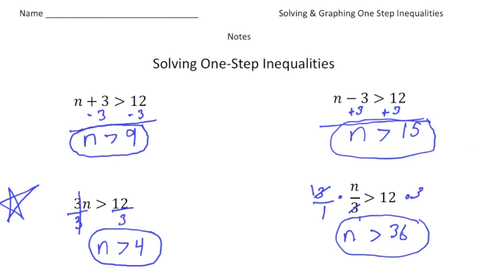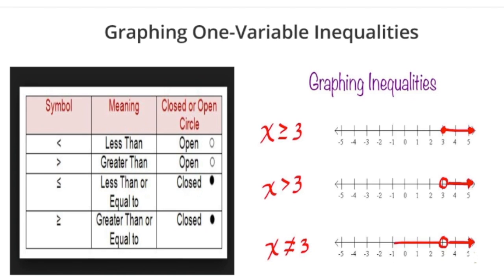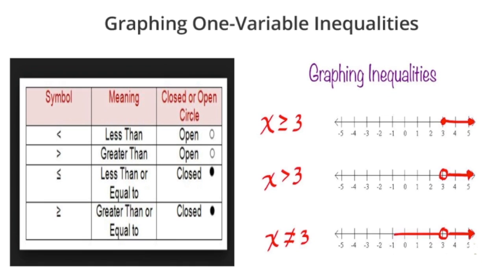If you turn the page, this page reviews how to graph inequalities. Put a little star next to this table over here — it shows the meaning of the symbols. For example, if you have a less-than sign, the way you graph it is with an open circle. Same thing for a greater-than sign: it's going to be an open circle.